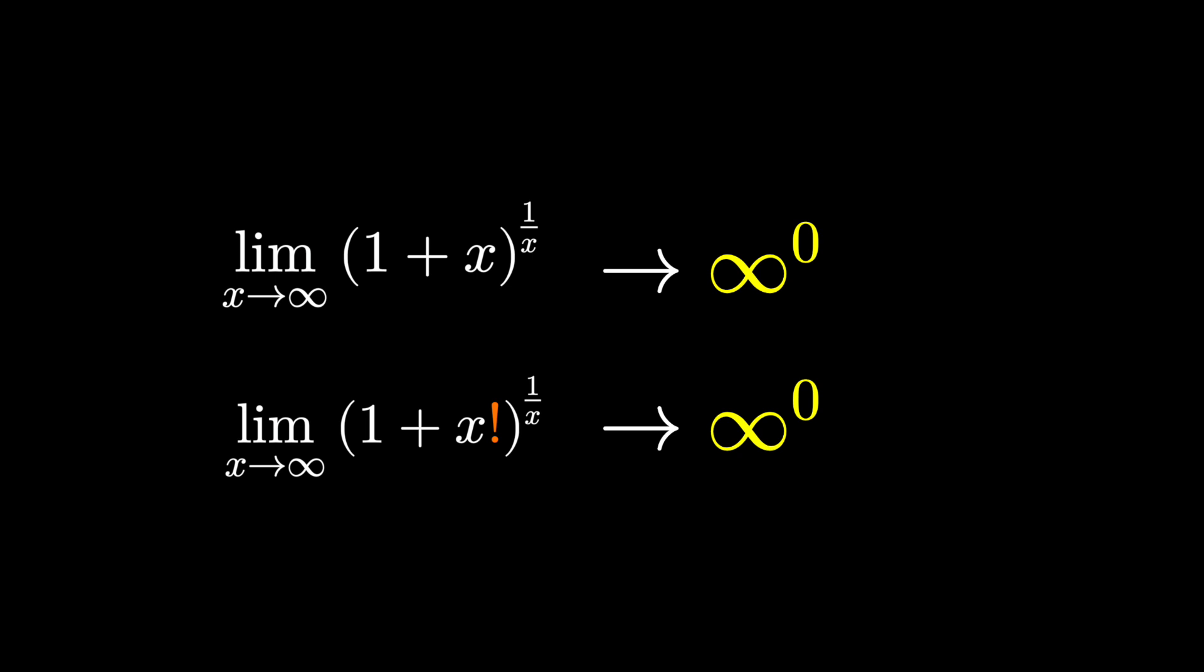However, using calculus techniques, we can evaluate these limits and find their true value, which are different. This is why infinity to the 0 is known as an indeterminate form when we're talking about limits. We have to do some further inspection to actually determine what it is in that case.